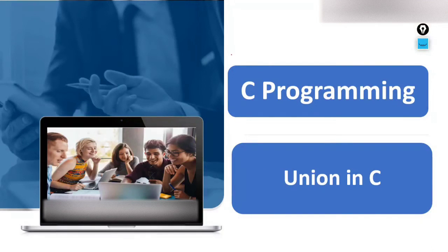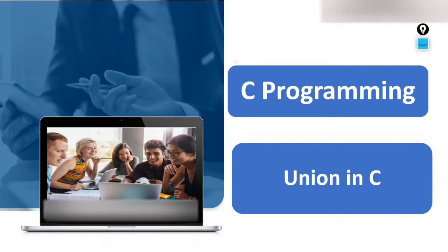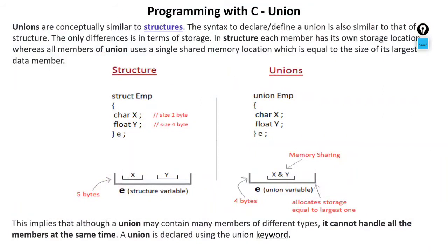Hello and welcome. Today the topic of discussion is Union in C programming. Prior to this, we have discussed structures — how the members of the structure are initialized, how they are accessed, and what is an array of structure. We have discussed all those things prior to this video, and today we will discuss what is Union in C.